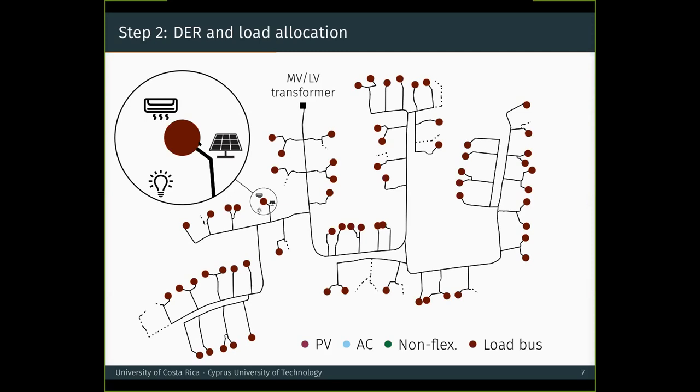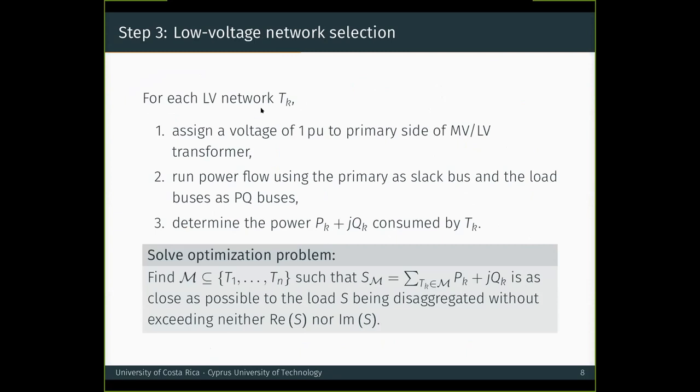After this allocation, we can therefore estimate what will be the consumption, the total consumption of each network, and use that estimate to select which of the available networks will be used to disaggregate a load, and we do that in the third step. For each low voltage network, we assign a voltage of one per unit to the primary side of the step-down transformer. Then we run a power flow using the primary as a slack bus and the load buses as PQ buses, and finally we determine the power consumed by that network. It is true that these networks will not operate in general at a voltage of one per unit when they are connected to the rest of the system, but this assumption is useful to know which networks to choose in the first place.